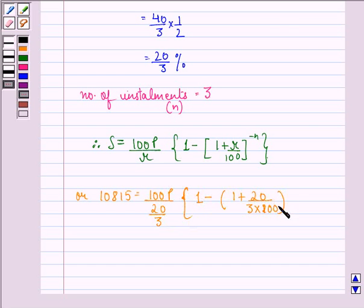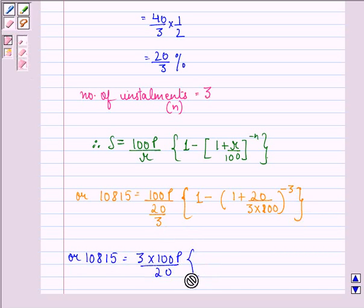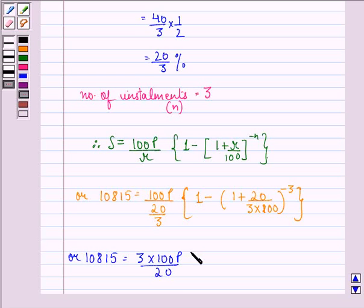Or 10,815 is equal to 100 times P divided by 20/3, multiplied by 1 minus (1 plus 1 upon 3 times 5) to the power minus 3.